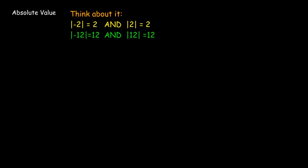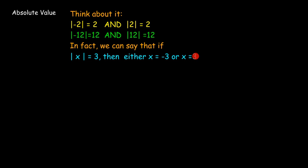So if I say that the absolute value of some number is 3, that number could be negative 3, because the absolute value of negative 3 equals 3, or it could be positive 3. So in an absolute value equation, we're going to have an either-or situation.